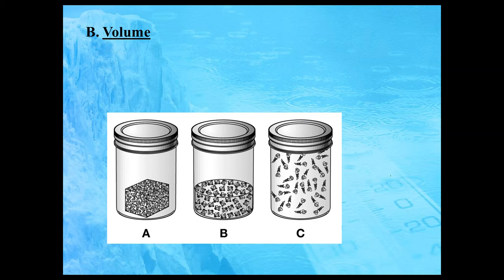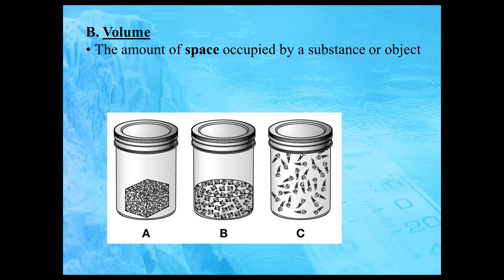Let's also look at a physical quantity called volume. Volume is the amount of space occupied by a substance or an object. Again, we want to describe volume as either definite — meaning it doesn't change — or indefinite. For that brick in container A, you can rotate it onto a different edge, but it still occupies the same amount of space. Same with liquid: even if you pour it into a different container, it takes up the exact same amount of space, although its shape is a little different.